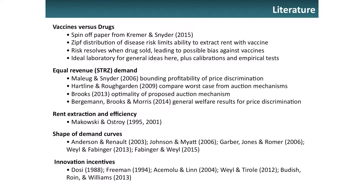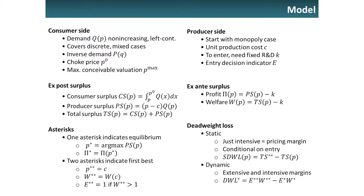Here's the model — very simple. On the consumer side, we just have this demand curve Q(P), which allows for continuous, discrete, or mixed distributions, and an inverse demand curve. We have a choke price — the vertical demand intercept. On the producer side, we start with the monopoly case, assuming a unit production cost C. To enter, there's a fixed R&D cost K and the entry decision is given by indicator E. We have ex post and ex ante measures of surplus: consumer surplus, producer surplus, total surplus as their sum, profit which subtracts K from producer surplus, and welfare which subtracts K from total surplus.